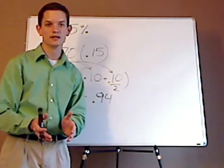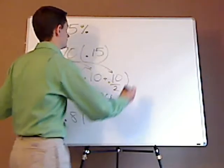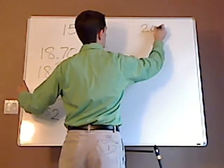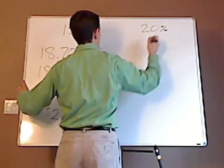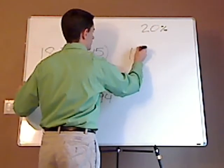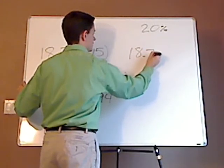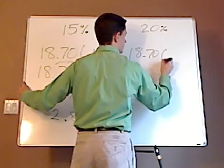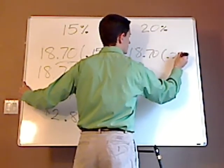Now let's say that you want to calculate 20% mentally. So again, you take the same amount, $18.70 times 20.